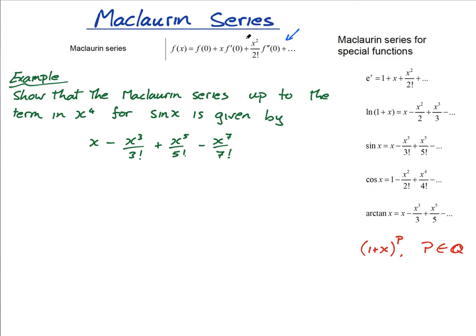It's simply just subbing things into this formula, but I want to show you how to lay it out and how to do it properly. So the function is sin of x, and we want to show that the Maclaurin series for sin of x is this. It says the Maclaurin series up to the term in x to the seven for sin x is given by this.